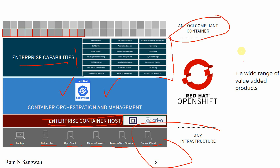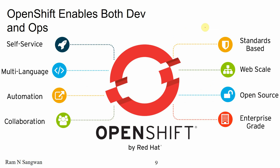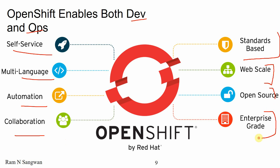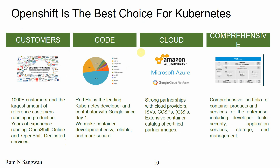Any OCI-compliant container can be used — not only Docker or Podman — plus a wide range of value-added products. OpenShift enables both developers and operations: self-service, multi-language support, automation, collaboration, standards-based, web-scale, open source, and enterprise grade. All these development and operations features are enabled in OpenShift. OpenShift is the best choice for Kubernetes.